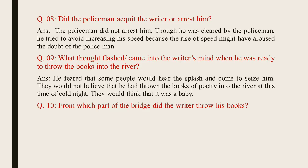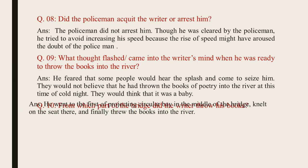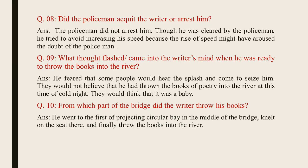Question number 10: From which part of the bridge did the writer throw his books? The answer is, he went to the first projecting circular bay in the middle of the bridge. He knelt on the seat on that railing and finally threw the books into the river.